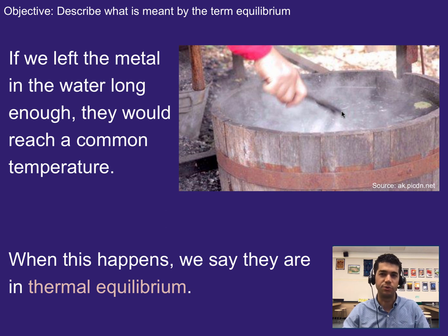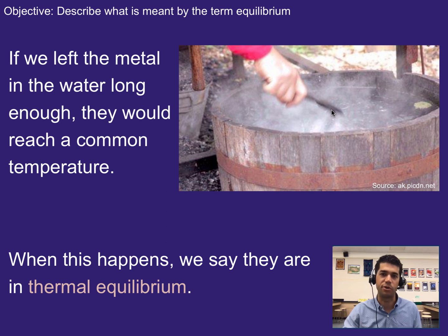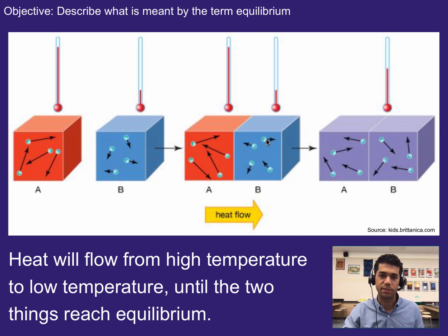It would be kind of like if you and a friend decided to trade dollars — you give them one dollar, they give you one dollar. Effectively, you're both at the same point as you were before. At thermal equilibrium, it's not that there is no energy moving or transferring at all. It's just that there's the same amount going each direction. So to recap: heat flows from high temperature to low temperature until things reach thermal equilibrium.